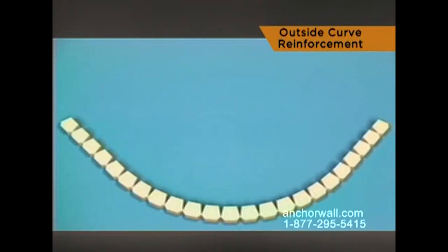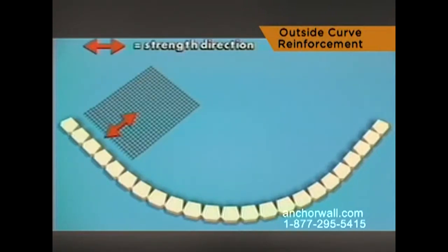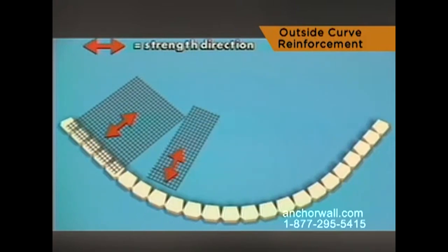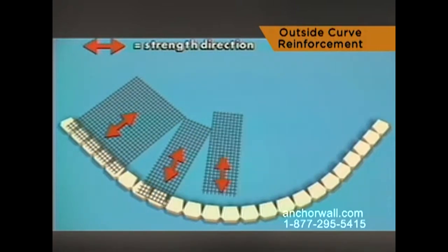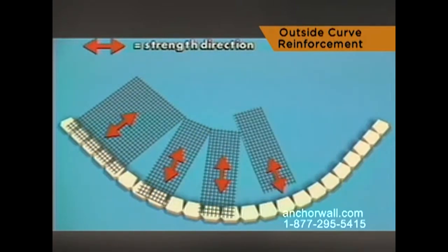Cut your reinforcement to the design length specified in your wall plan. Lay sections of reinforcement within one inch of the face of the wall with a strength direction perpendicular to the wall face. To avoid overlapping reinforcement, separate each section.